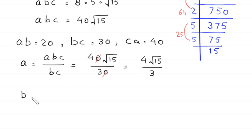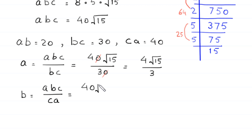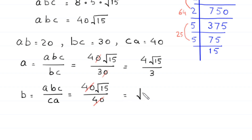Now B equals ABC divided by CA. This is equal to 40 times root 15 divided by 40. The 40s cancel and we get the value of B is equal to root 15.